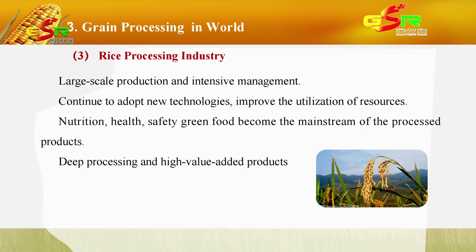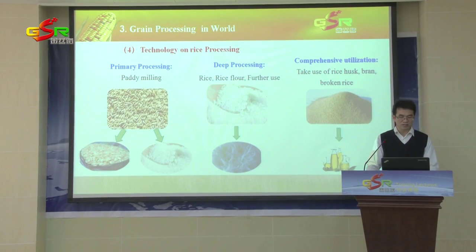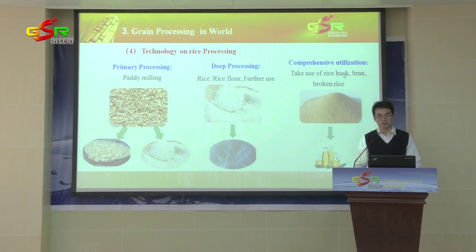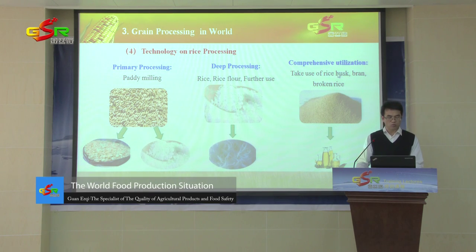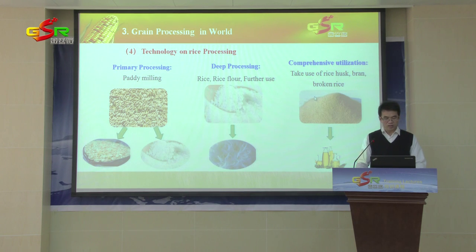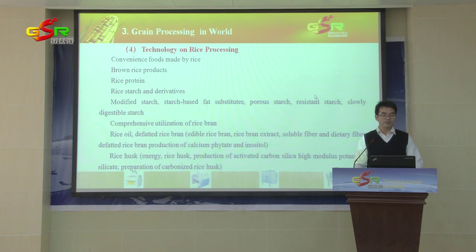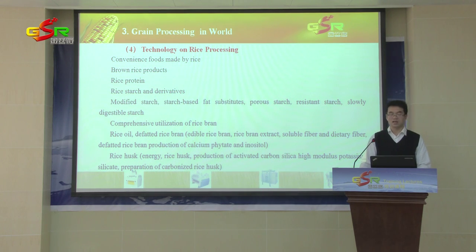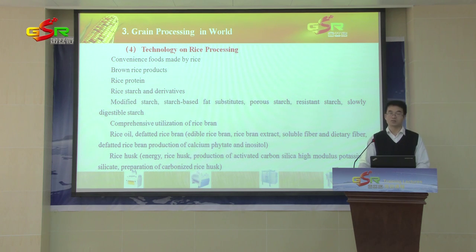This is the technology about rice processing. The technology of rice processing also mainly includes three aspects: primary processing, deep processing, and comprehensive utilization. The products of rice processing mainly include rice, rice flour, rice husk bran, and broken rice. After deep processing of rice, we can get rice protein, rice starch, and other products like modified starch, resistant starch, and slowly digestible starch.